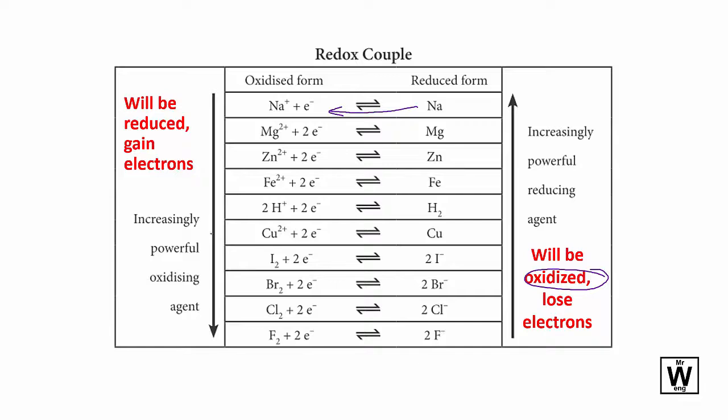And this is an increasingly powerful oxidizing agent. So if it's oxidized, it will itself be reduced, therefore it will gain electrons. So this one will want to go in this direction.